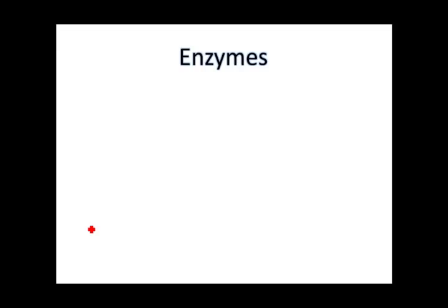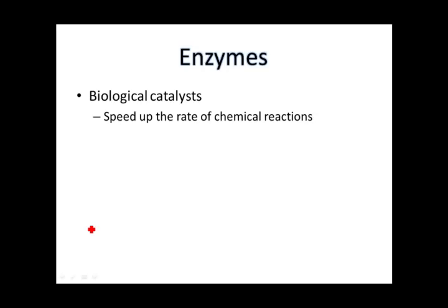Today we're going to be talking about enzymes. Enzymes are biological catalysts. Catalysts are chemicals or molecules that catalyze, or make reactions happen faster. Biological catalysts are mostly proteins — chemicals or molecules found inside cells that are causing reactions to happen faster than they would normally, and they happen a lot faster.